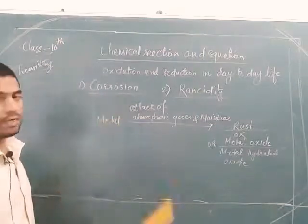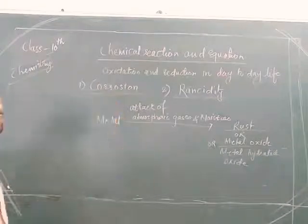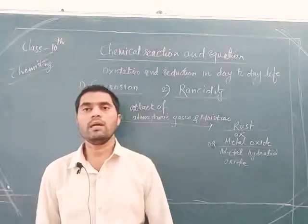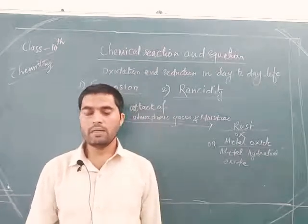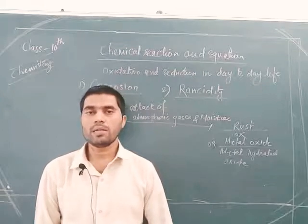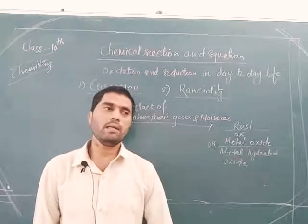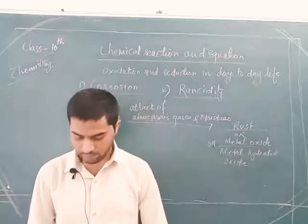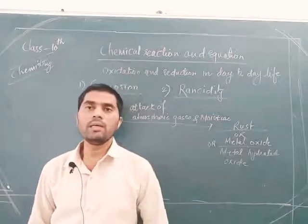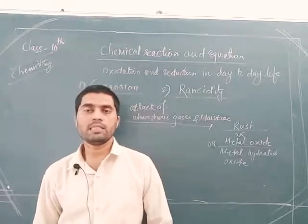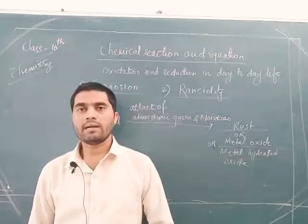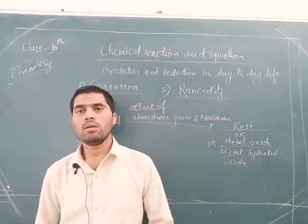First of all we see corrosion. You can observe corrosion in our atmosphere and in your nearby surroundings very easily. When metal pieces are kept openly in the environment, these metal pieces slowly spoil and decompose, and there is a deposition of a red color layer on the surface of the metal.